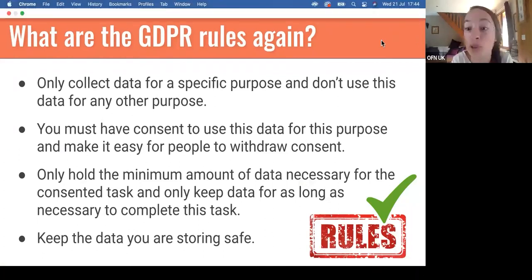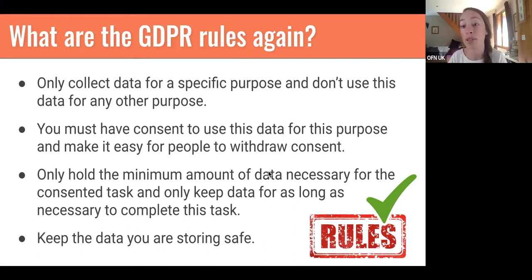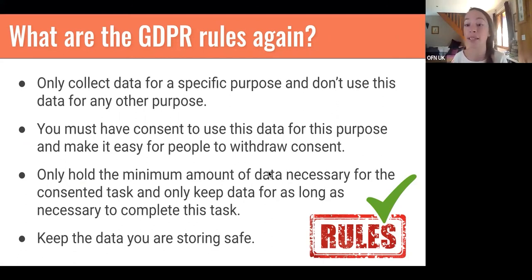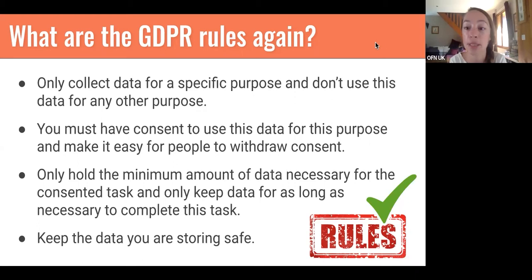Here's an overview of the rules for your food enterprise — and this applies equally to small and big businesses. You want to make sure you're only collecting data for a specific purpose. If you're collecting people's name and email address, you want to only use that for what you said you'd use it for. So if you say you're going to send a newsletter once a month, strictly speaking you wouldn't then be able to send them order cycle reminders without being explicit about that first.